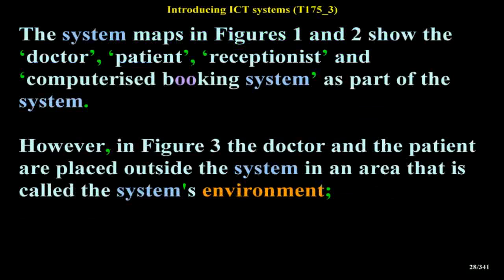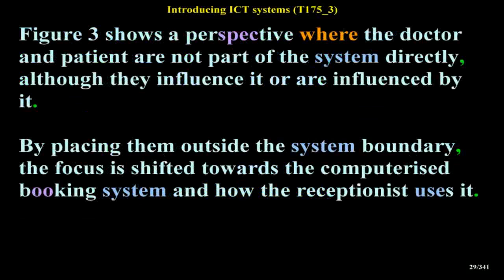However, in Figure 3 the doctor and the patient are placed outside the system in an area called the system's environment. Figure 3 shows a perspective where the doctor and patient are not part of the system directly, although they influence it or are influenced by it. By placing them outside the system boundary, the focus is shifted towards the computerized booking system and how the receptionist uses it.